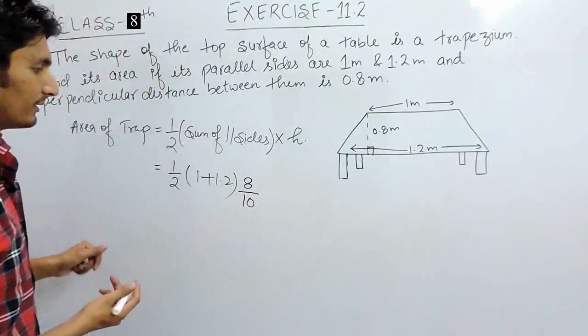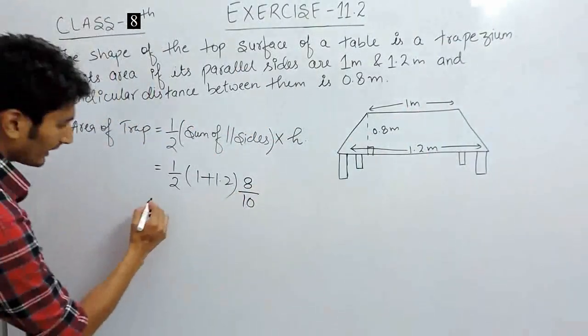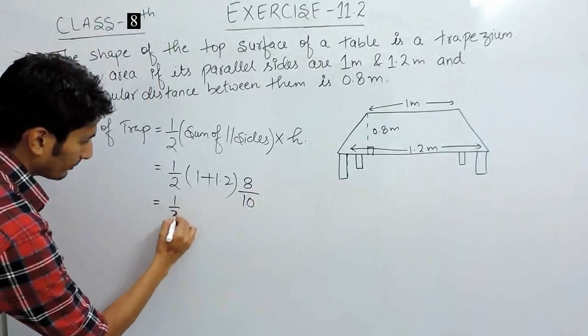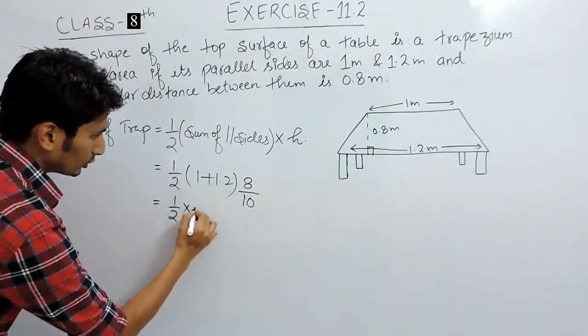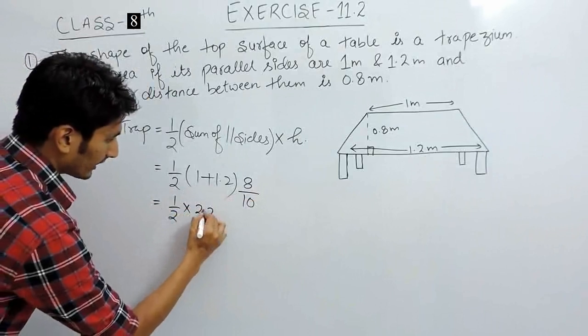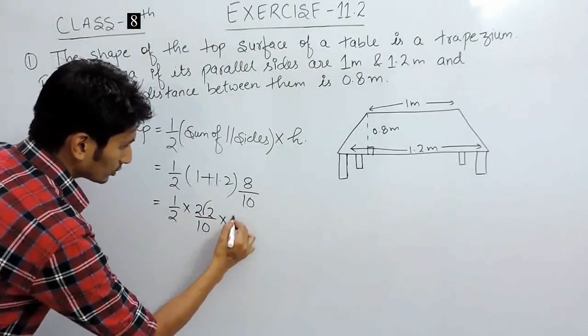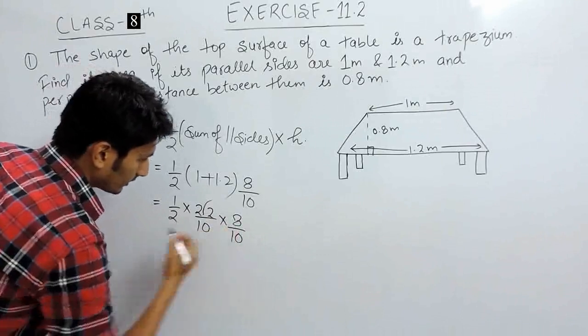If I remove decimal, that will be 8 upon 10. This is 1 upon 2. This is 2.2. Again removing the decimal, this is upon 10. So this will be 8 upon 10.